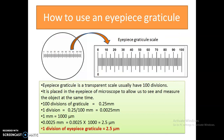Now, how do we use this eyepiece graticule? We have inserted the eyepiece graticule into the eyepiece of the optical microscope. When you look into the eyepiece of your microscope, you can observe a scale. If we zoom into this scale, we can see that it has 100 divisions.